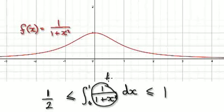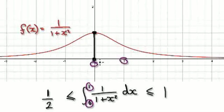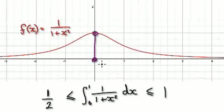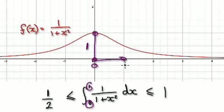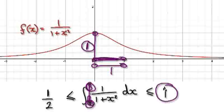If you put zero into this thing, then this whole thing here would be one. So the biggest height here would be one. And because you're evaluating it between zero and one, the biggest thing that this could be is one. So one times the width — because this here is a width — one times one gives you one.